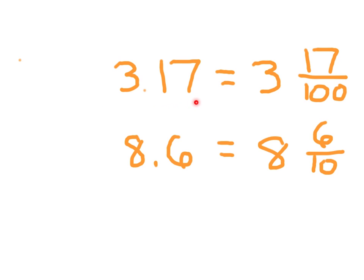This is 3 and 17 hundredths, and that's how we write our mixed number, 3 and 17 over 100, 3 and 17 hundredths.